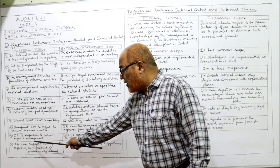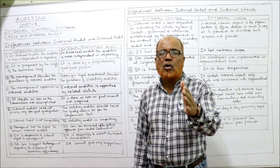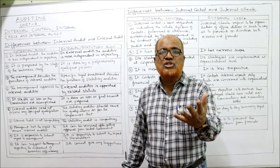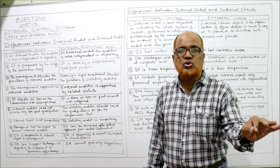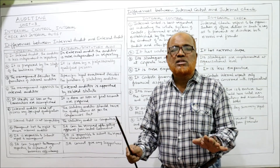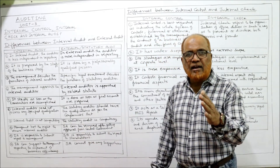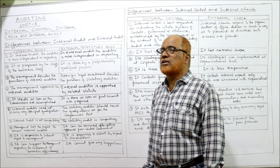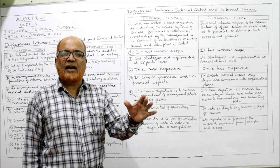Tenth difference: suggestions. The internal auditor, being an employee, can suggest improvements to the management regarding business efficiency and the functioning of the organization. Whereas the external auditor cannot give any suggestions to the management; the external auditor simply makes the report and submits it to the shareholders. So these are the differences between internal audit and external audit — remember, external audit is nothing but statutory audit.